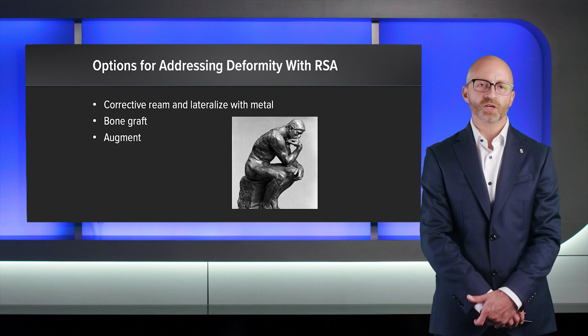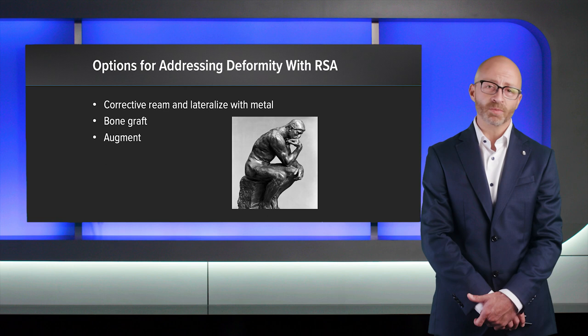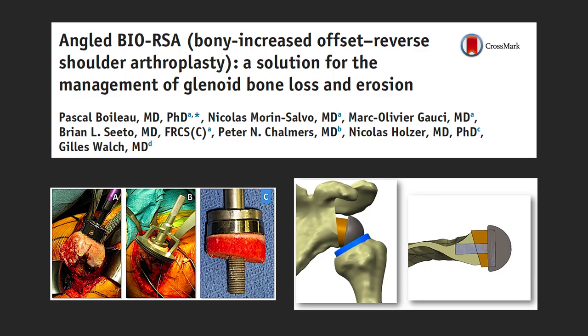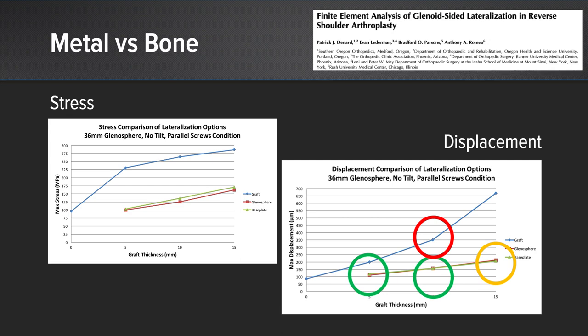Now, regarding options for addressing deformity with reverse shoulder arthroplasty, we really have three approaches: we can correctively ream and lateralize with metal, we can use bone graft, or we can augment. The MGS implant has offset options from 0 to 8 mm in 2 mm increments, allowing us to regain a lot of offset through the metal itself. Bone grafting as described by Pascal Boileau is a well-described solution for bone loss in reverse shoulder arthroplasty, associated with high rates of osseous integration on CT scans. However, in finite element analysis, metal performs better than bone — the further lateral you go, the more subject bone is to displacement under stress. So the ideal scenario is metal, all things being equal.